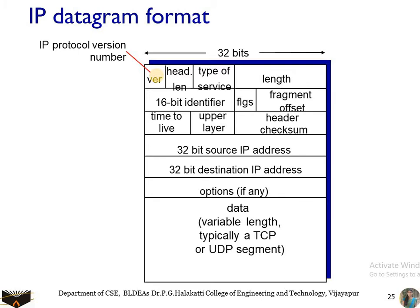The datagram format for the current version IPv4 uses the IPv4 format. Next we have the header length (HLen). This is also 4 bits, which is needed to determine where in the IP datagram the data actually begins. If the header length is 4 bytes, the next part is considered actual data. Most IP datagrams do not contain options, so typically an IP datagram has a 20-byte header.